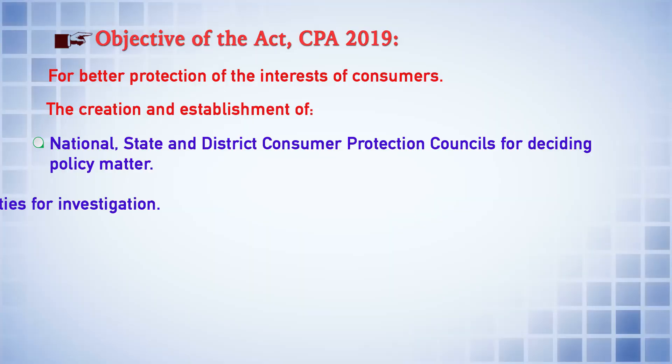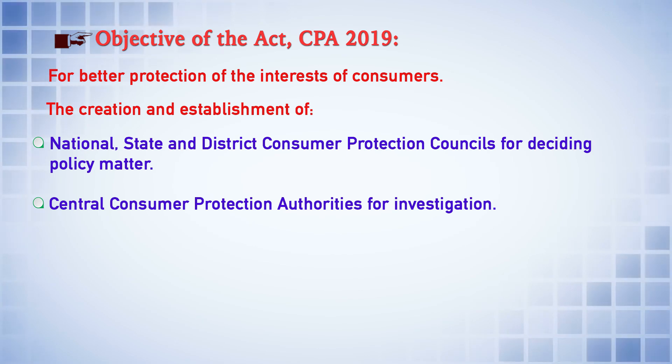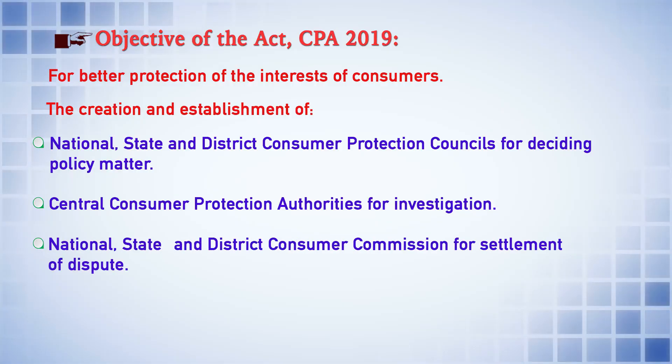A second institutional mechanism created under the law is the Central Consumer Protection Authority. Their job is primarily to carry out investigations about violation of consumer rights, deviation from regulations provided by concerned regulatory bodies, or whether any offenses are committed, any misleading advertisements made to the public. For that purpose, the Central Consumer Protection Authority has been created.